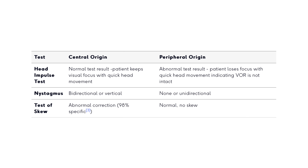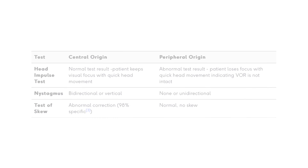Collectively, when all three HINTS exams are performed in a dizzy patient, it is 95% accurate in identifying a central cause like stroke or peripheral origin like labyrinthitis. Accuracy is further increased when performing a HINTS Plus test by adding a fourth sign, which is the presence of a one-sided, new-onset hearing loss.